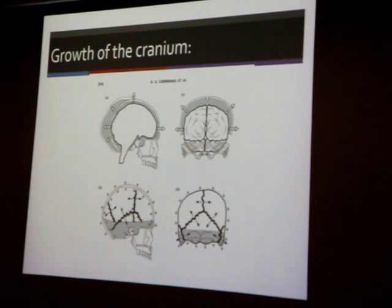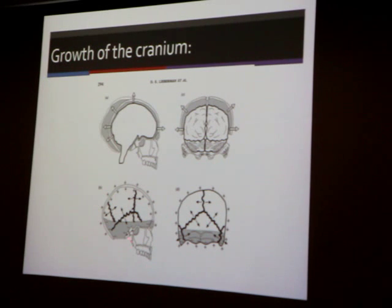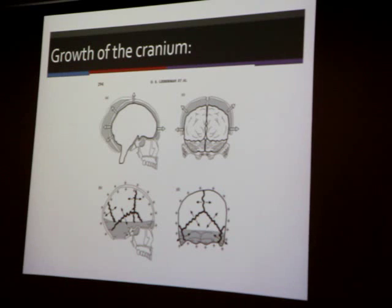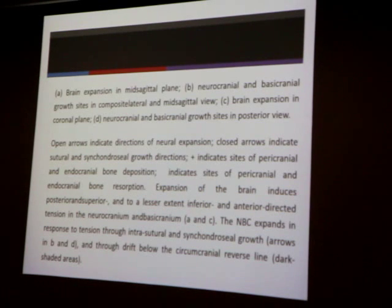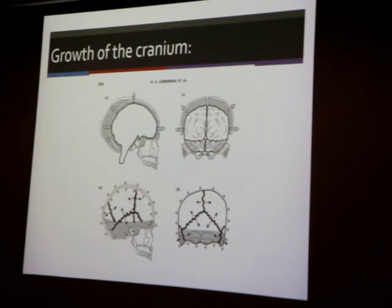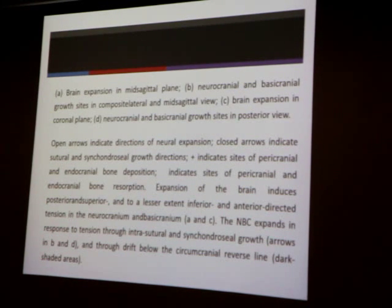Regarding the arrows for the sutures: the arrows indicate that the distance between two points gets bigger because of the suture opening and having new bone go in between. The tension caused by bone displacement leads to new bone formation at the suture matrix.